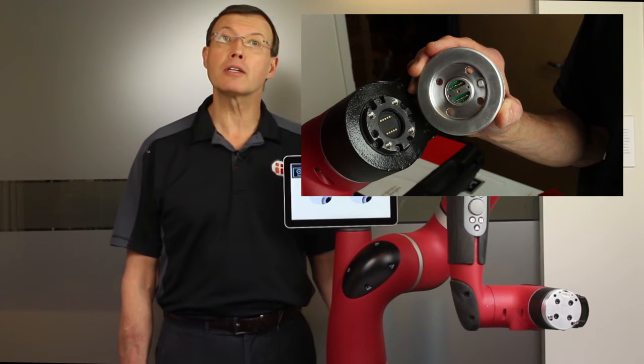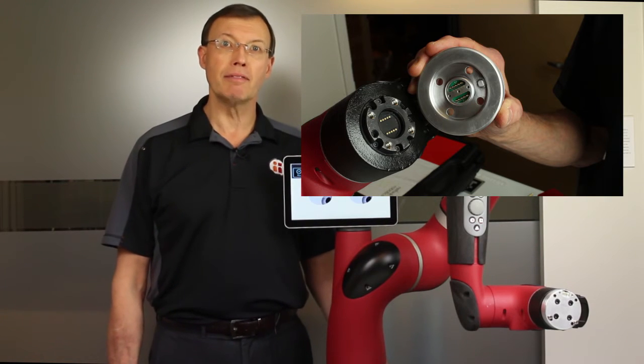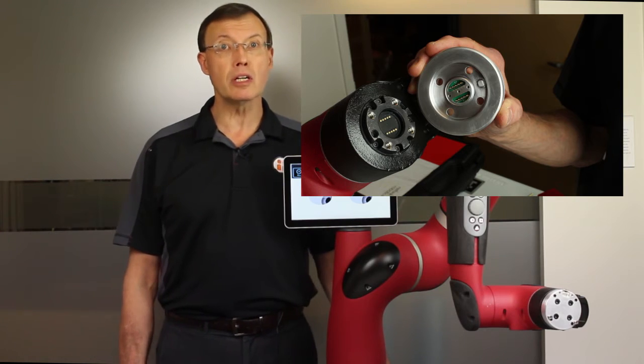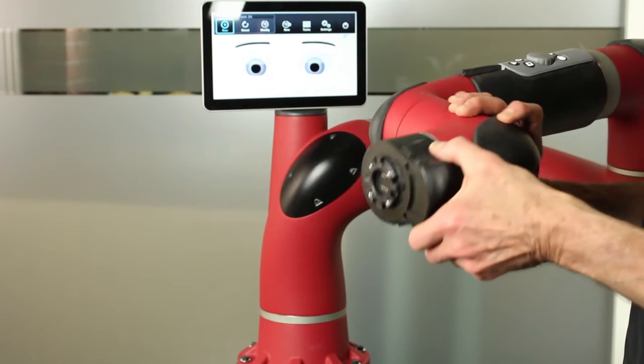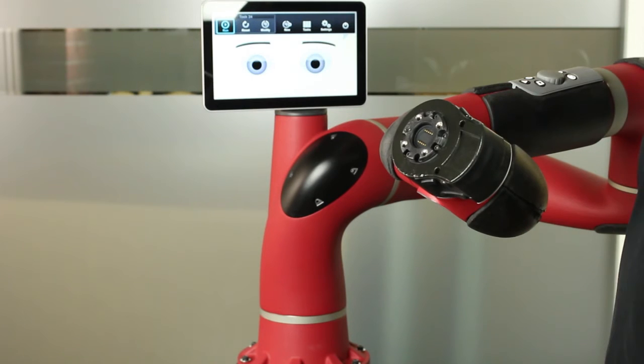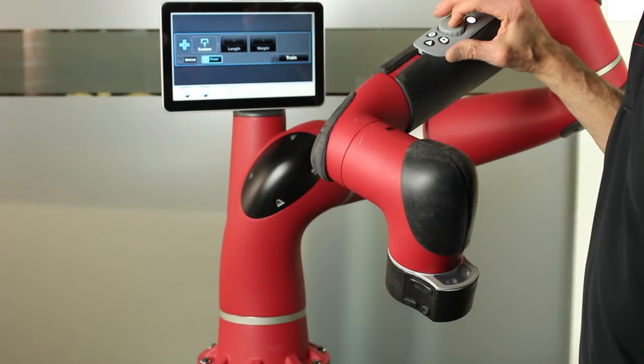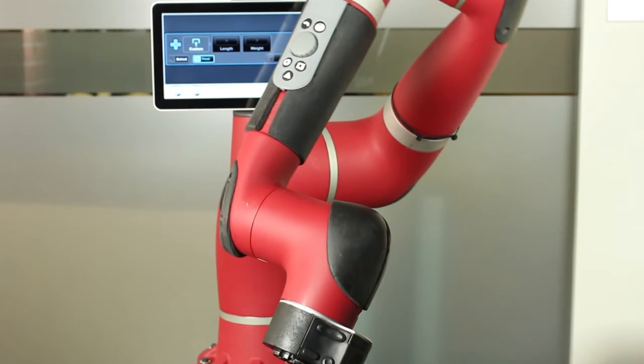Next, we'll install the Baxter gripper adapter plate and vacuum gripper on the training cuff. Squeeze the zero-g area on the training cuff and move the arm to a convenient location. Alternatively, select front or behind from the configure end effectors panel.